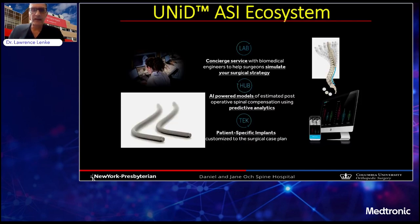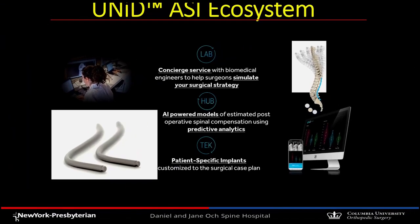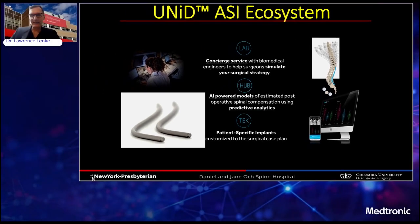There's a very nice concierge service with engineers that help simulate your surgical strategy in the sagittal plane. This is powered by AI methodologies that estimates not only the correction you're going to obtain in the region of the spine that you're fixing, but also helps predict what the spontaneous correction of the spine, especially above in the thoracic region, is going to occur during the correction down below. It also involves patient-specific implants that are customized to the surgical case plan.